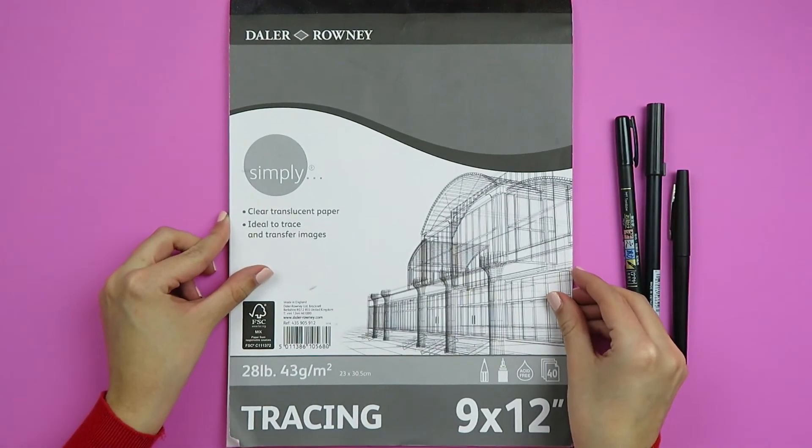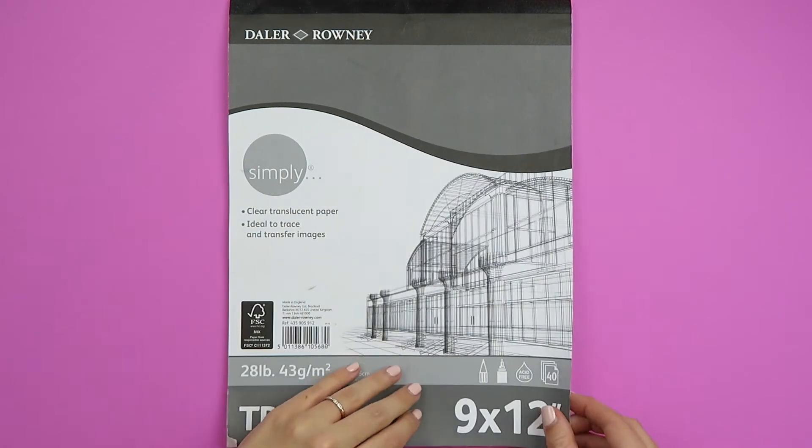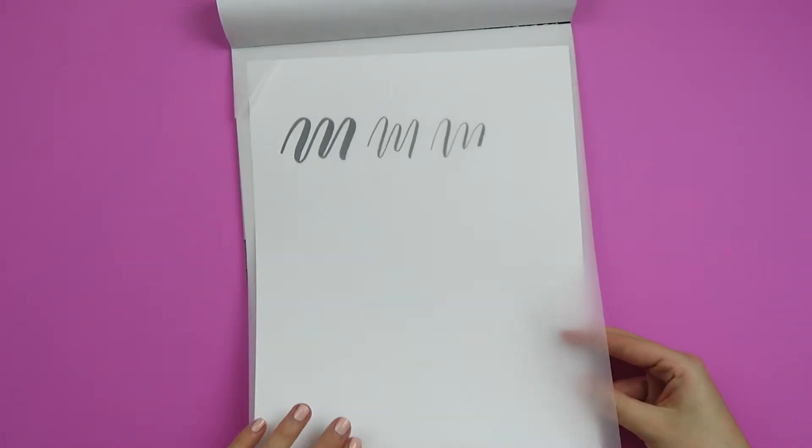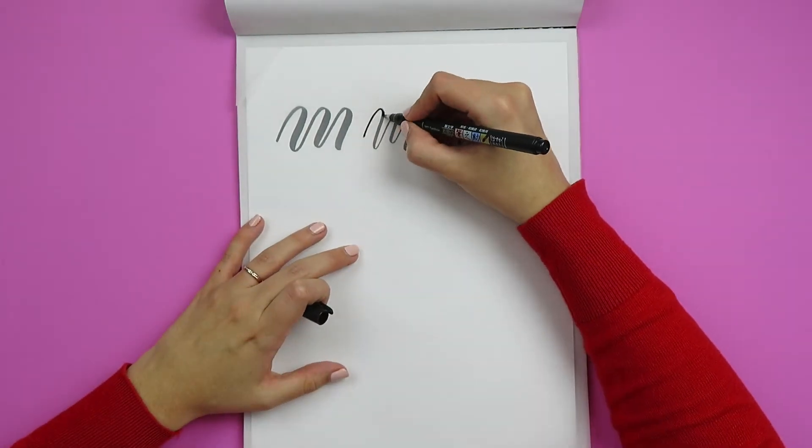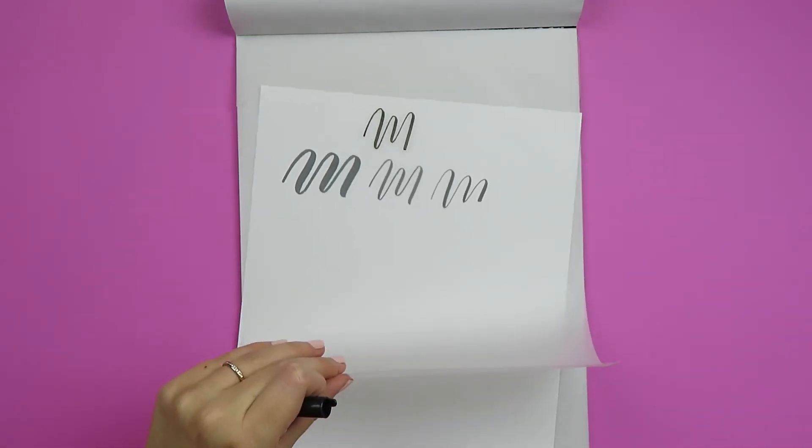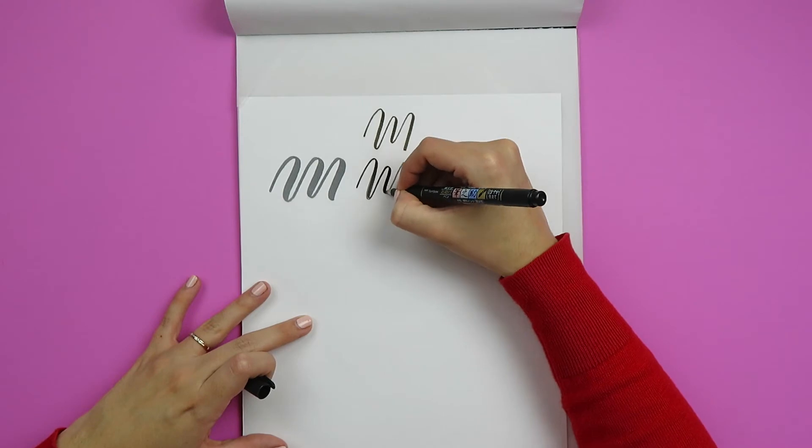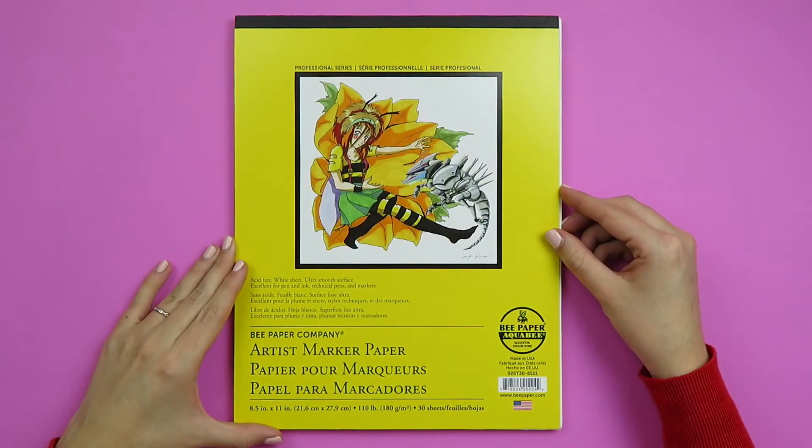We also have tracing paper. I think every beginner should have some tracing paper on hand because it's just incredible for muscle memory practice. So all you do is you place your little practice sheet under a sheet of tracing paper. Then you're able to go directly on top of the tracing paper and it's also really smooth as well and it's like butter, honestly, lettering on it. And then you can get in your muscle memory practice and you can just practice for days because a huge part of lettering is practice and just building up that muscle memory.